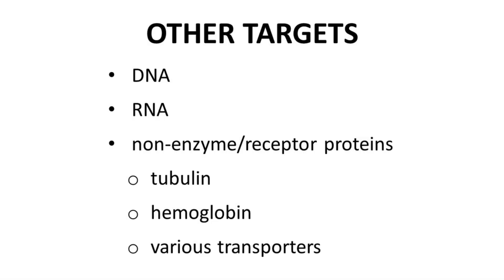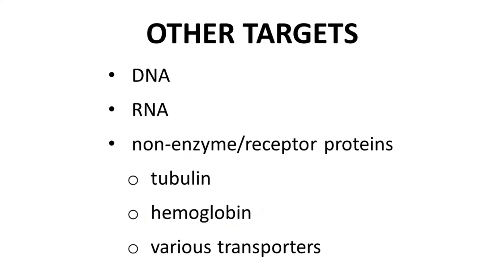Are enzymes and receptors the only drug targets? No, not at all. Most targets are receptors or enzymes, but there are others. DNA is a target for many early cancer drugs. RNA has become a more popular target as methods for designing RNA-binding drugs have become better understood. Proteins that are neither enzymes nor receptors are sometimes targeted by drugs. Examples include the structural protein tubulin, hemoglobin — the oxygen-carrying protein — and various transporter proteins found throughout the body.